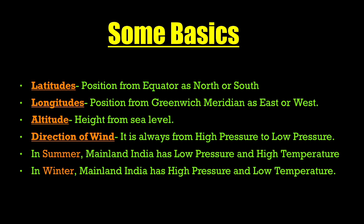Longitudes are vertical imaginary lines. They indicate the position of a particular area as east or west from the Greenwich Meridian, which is GMT and is considered 0 degrees. Third is Altitude, which is the height from sea level. Direction of wind is always from high pressure to low pressure.